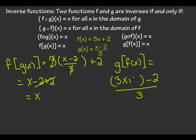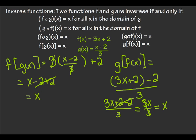Let's put f of x in there. Since I'm not multiplying anything through, I don't need these parentheses, so I'll end up with three x plus two minus two, all over three. Plus two minus two becomes zero, so I end up with three x over three. Three over three is one, which gives me x. Since they both come out equal to x, that tells me that f of x and g of x are actually inverses of each other.